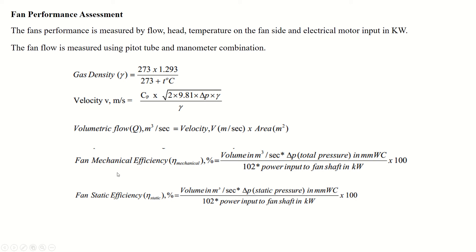The volumetric flow rate is the product of velocity and the cross-sectional area of the duct or pipe. Two efficiencies are linked to fans: mechanical efficiency and fan static efficiency. The formulas for calculating these efficiencies are also provided. Using these formulas, we can evaluate fan performance and carry out routine maintenance.